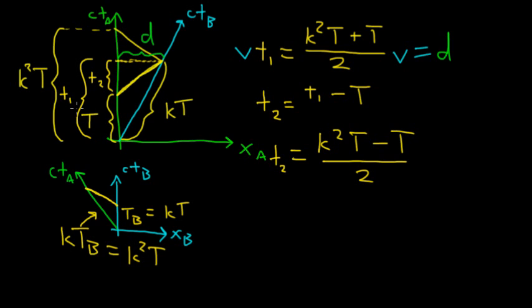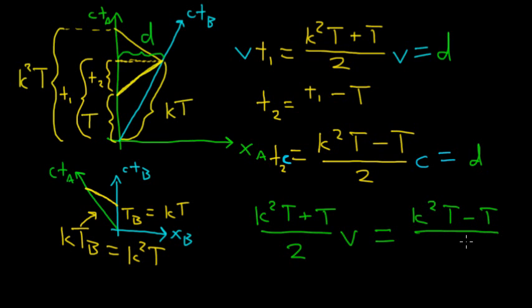So that is how long it took the light to make it from the origin to a position d. So if I multiply this t2 by c—sorry that got a little bit small—but if I multiply that by c, then that also has to equal my distance d. Okay, so we have two equations here—this equation and this equation that both equal d. So let's write that out. We have k²t plus t over two times v. This value must equal k squared t minus t over two times c. So these two are the same. Those values have to match up.